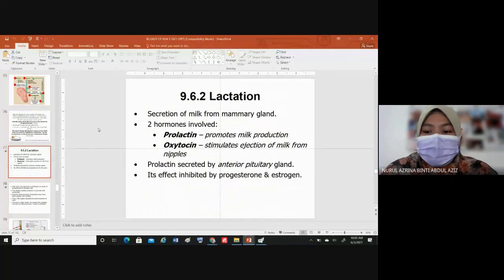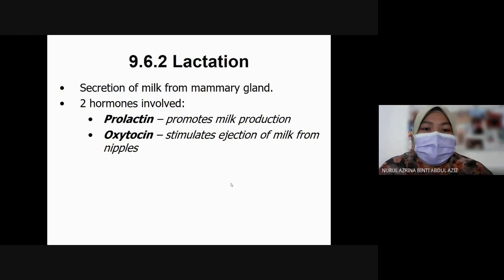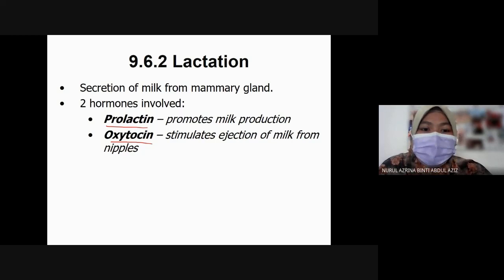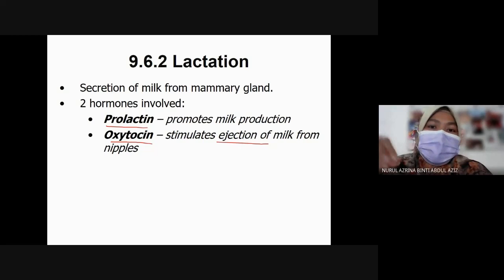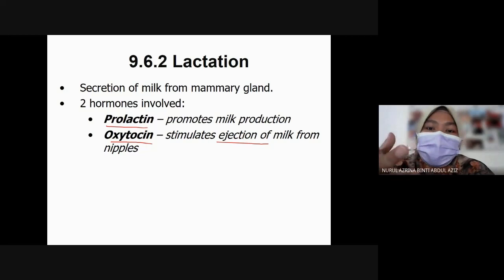Today our topic is lactation. Lactation is the secretion of milk from the mammary gland. The secretion of milk involves two hormones: prolactin and oxytocin. Prolactin stimulates milk production whereas oxytocin stimulates ejection of milk from the mammary gland. Oxytocin is not only involved in inducing labor by stimulating contraction of the uterus, but also stimulates ejection of milk from the mother's nipple. Prolactin and oxytocin must work together — some people have milk produced but it cannot come out, causing engorgement, and that is due to low oxytocin.